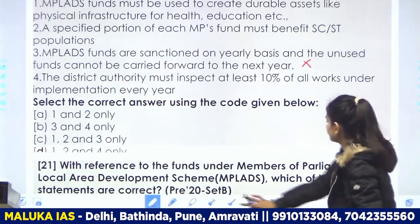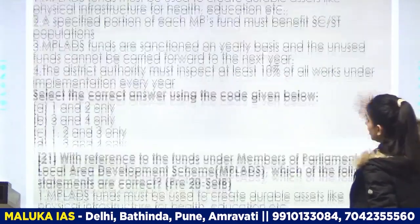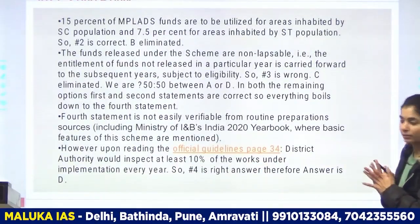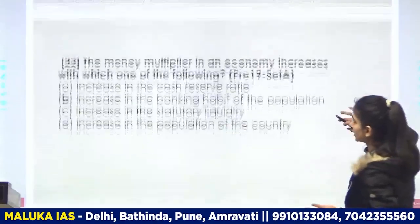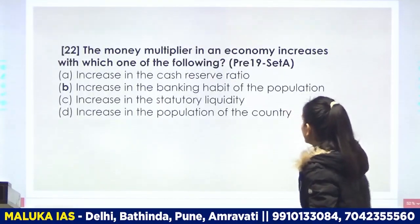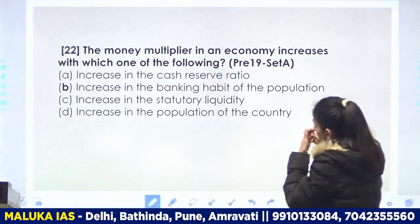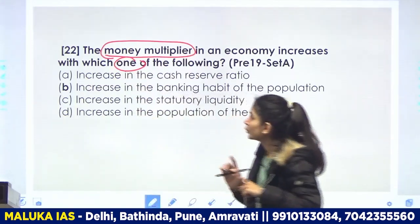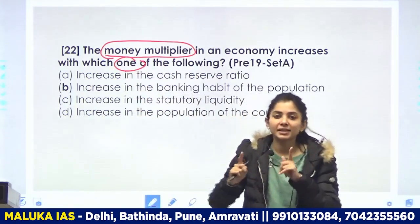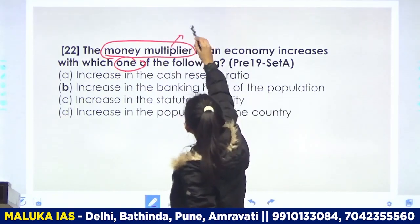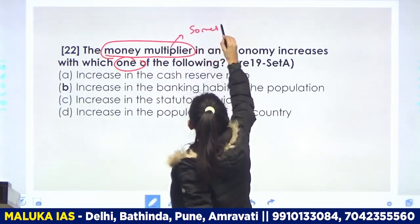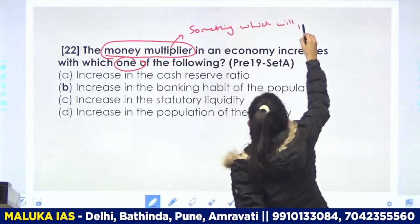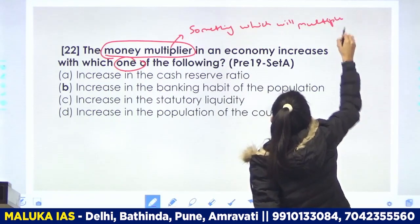आप इसका screenshot ले सकते हैं। अब हम next question की तरफ आते हैं — the money multiplier in an economy increases with which one of the following? Money multiplier — something which will multiply the money.